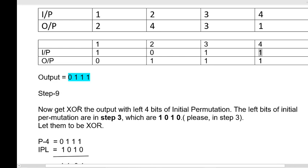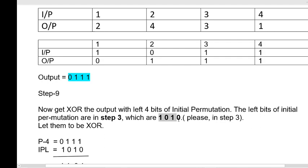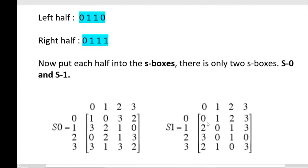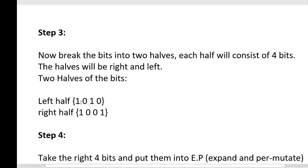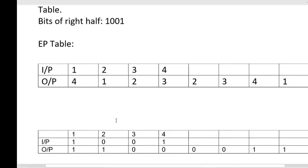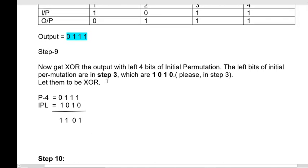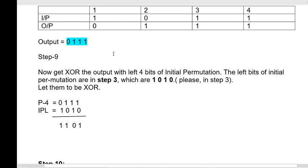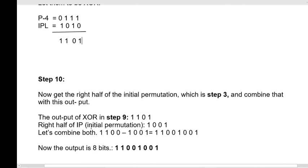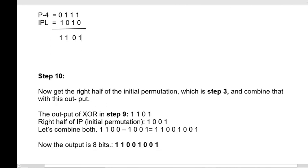In step nine, perform the XOR operation between the P4 output and the left part of the initial permutation. The left part of the initial permutation from step three is 1010. The output from the previous step is 0111 and the left part of the IP table is 1010. After performing XOR the output is 1101. Now combine this with the right half of the initial permutation from step three, which is 1001. Combining 1101 with 1001 gives 11011001.